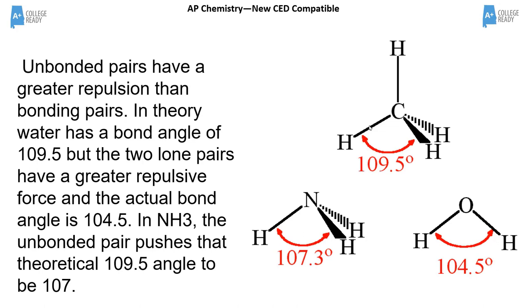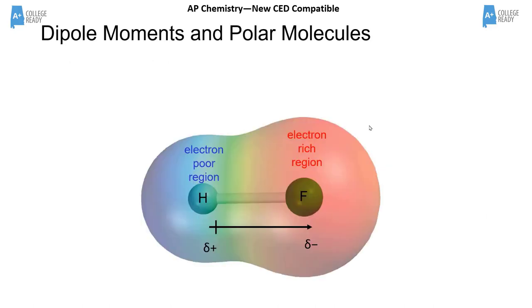Every lone pair has a greater repulsive force, so having lone pairs pushes bond angles below 109.5°. After establishing geometry and Lewis structures, we can determine whether a molecule is polar and whether it has a dipole moment. Later, in intermolecular forces, we'll use this information further, but for now we're only concerned with whether a molecule has a dipole moment or not.